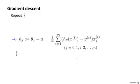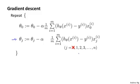Let me take this and just write the case for theta 0 separately. I'm just going to write the update for theta 0 separately, then for the update for the parameters 1, 2, 3, and so on up to n. I haven't changed anything yet. This is just writing the update for theta 0 separately from the updates for theta 1, theta 2, theta 3, up to theta n.